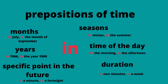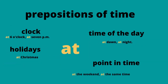Prepositions are also used as time indicators. The preposition 'in' is used for months — 'in July' or 'in the month of September'; for years — 'in 1966' or 'in the year 1900'; for specific points in the future — 'in a minute' or 'in a fortnight' (which means two weeks); for seasons — 'in winter' or 'in the summer'; for times of the day — 'in the morning' or 'in the afternoon'; and for duration — 'in two minutes' or 'in a week.'